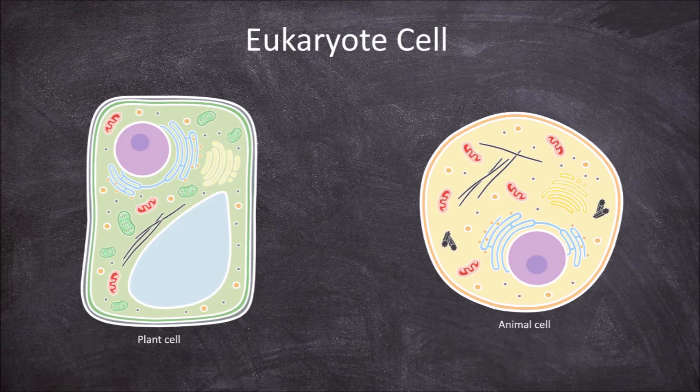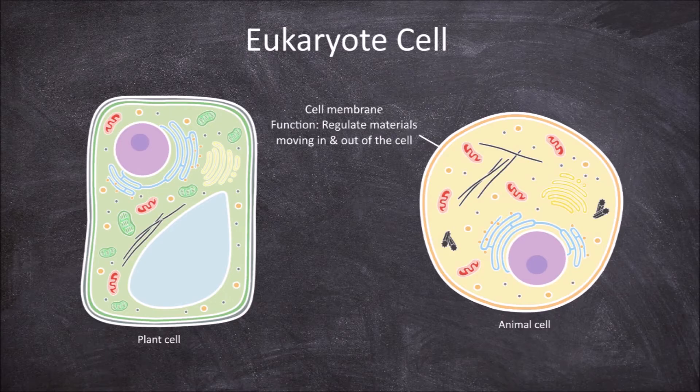Both types of cells are surrounded by the cell membrane, also known as the plasma membrane. The function of the cell membrane is in the regulation of materials into and out of the cell through the membrane.